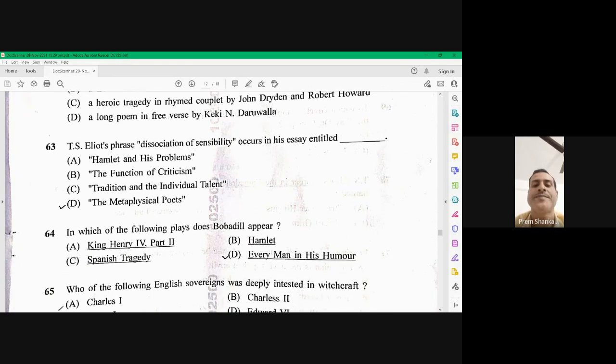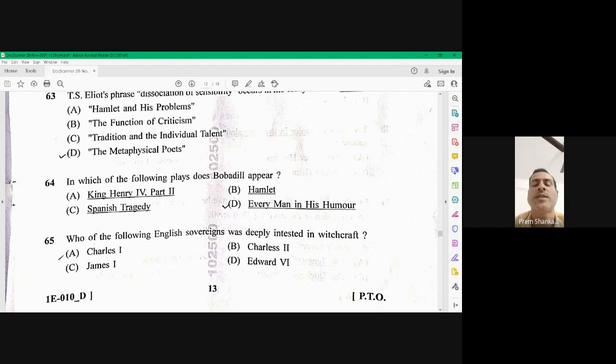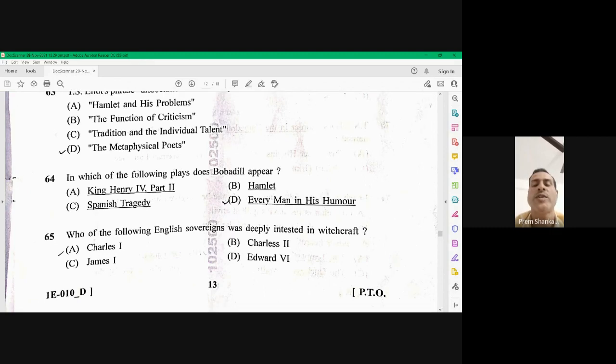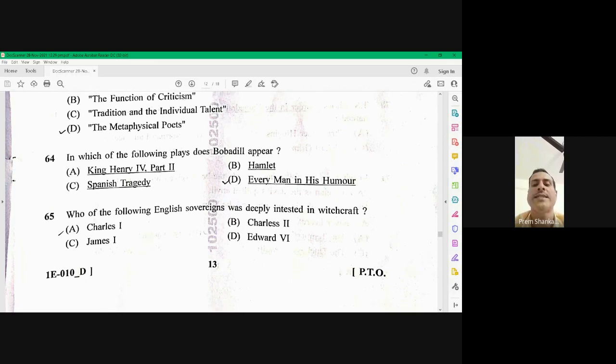Question number 65. Who of the following English sovereigns was deeply interested in witchcraft? Deeply interested. So James I was really frightened of the witches. So he was interested with the witchcraft. James I is the right option. 65 is C.